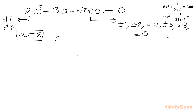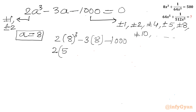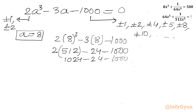Let's check: 2 times 8³ minus 3 times 8 minus 1000. 8³ = 512, so 2 × 512 = 1024. Then 1024 - 24 - 1000 = 0. Yes, it is matching! That means a = 8 is our root.